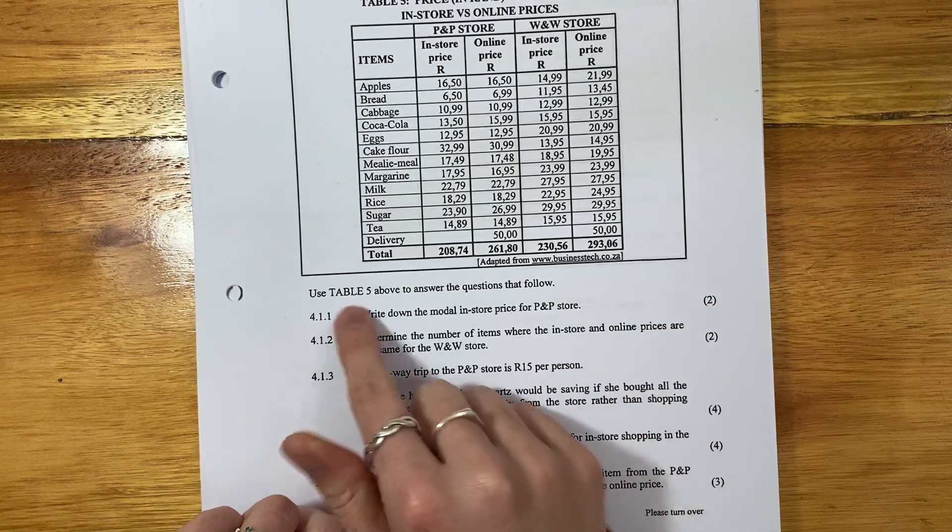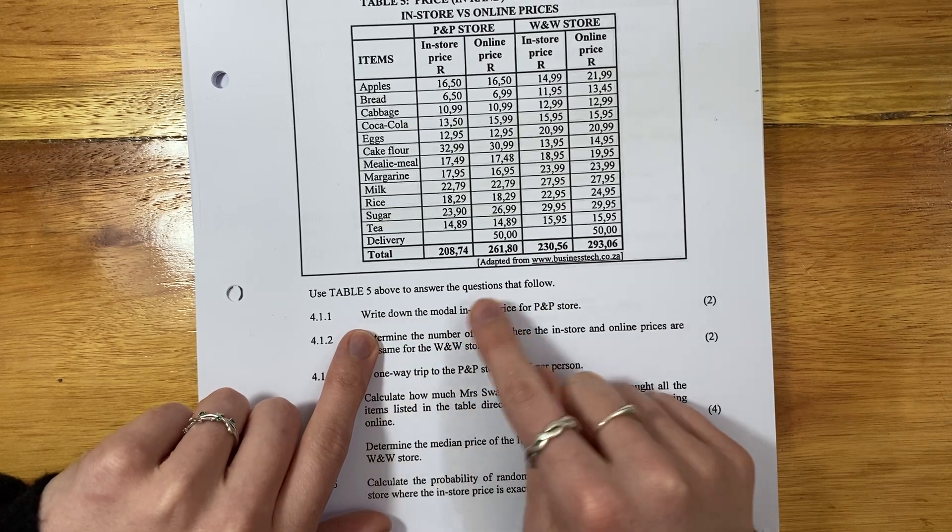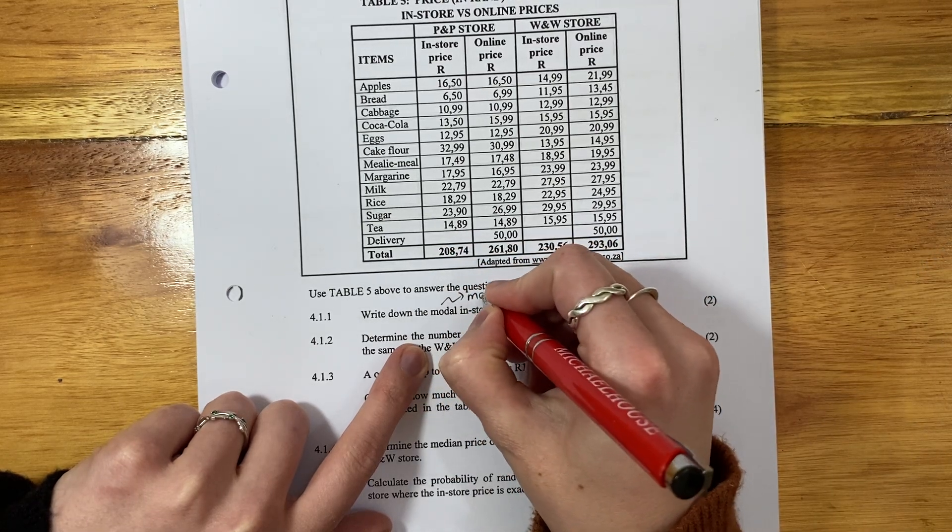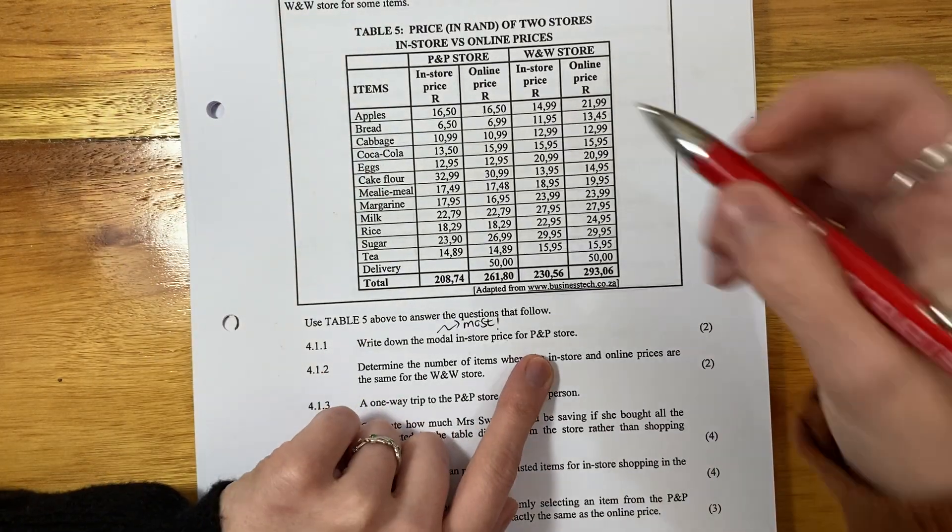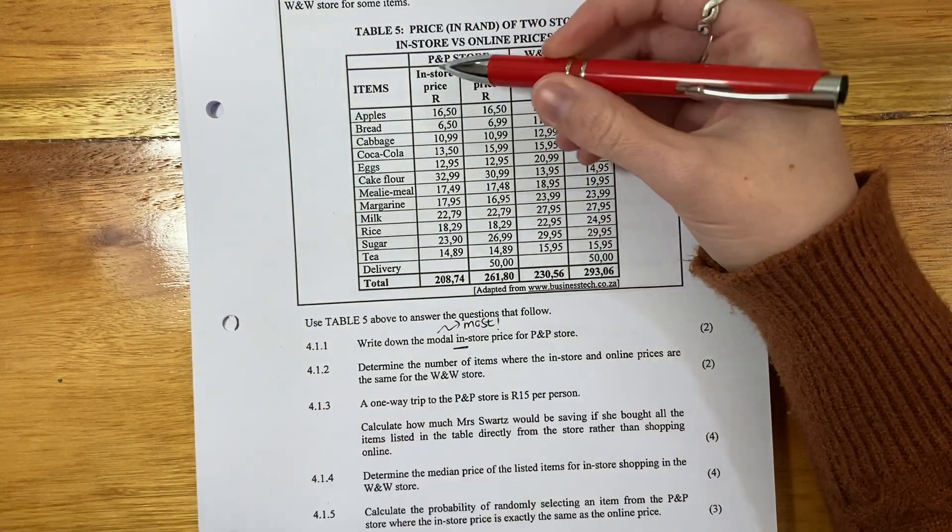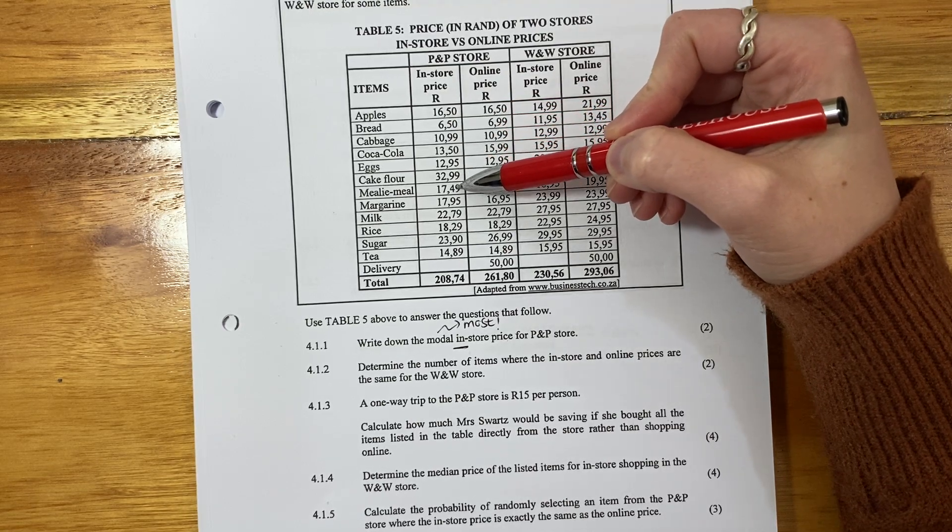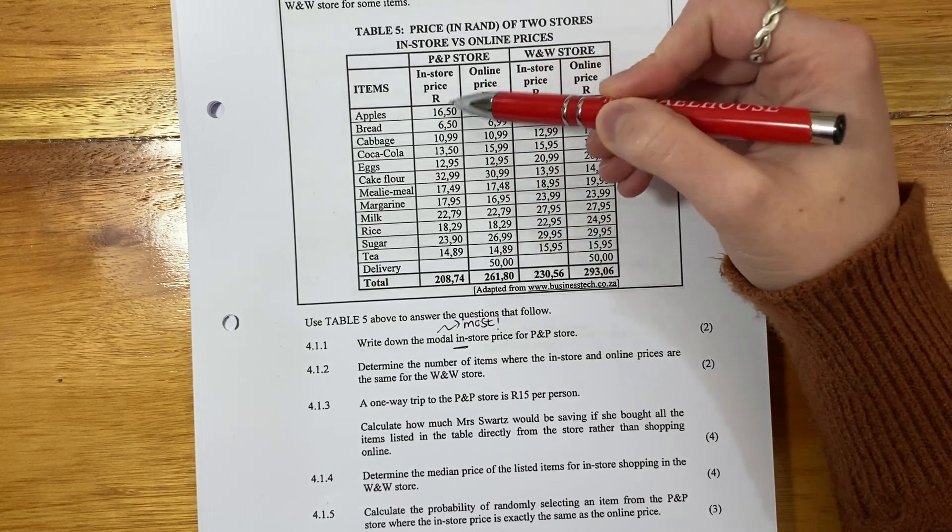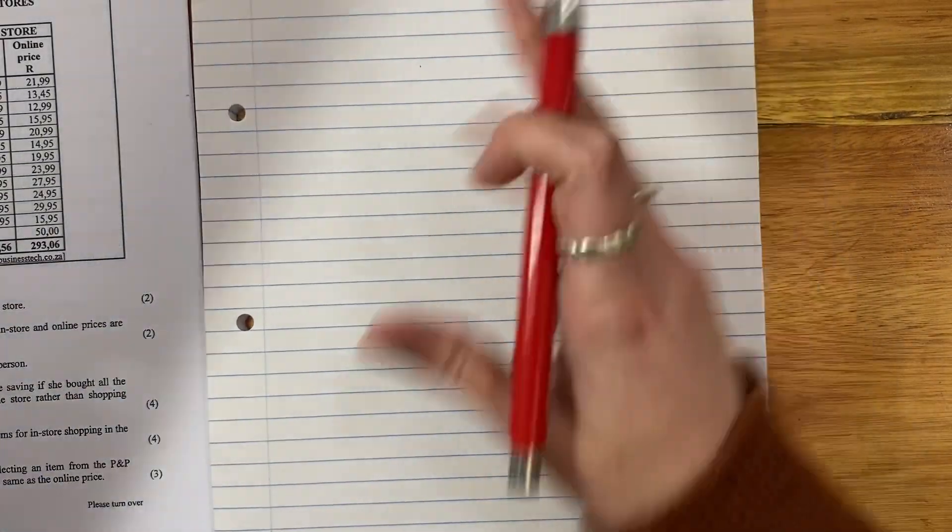Use table five above to answer the questions that follow. Write down the modal in-store price for P&P store. What does modal mean? Modal means most. So let's look at the P&P store, specifically in-store. Let's see if anything is repeated. These are 17 but their cents are different. There's actually no mode, nothing that's repeated. So they're all the mode, but because they're all different, we just say no mode.